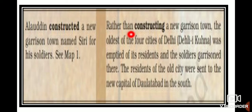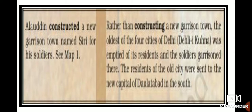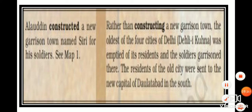Rather than constructing a new garrison town, Muhammad Tughlaq emptied the oldest of the four cities of Delhi. Its residents were sent to Daulatabad in the south, and the soldiers were garrisoned in that city. So the difference is: Alauddin Khilji constructed a new town, whereas Muhammad Tughlaq emptied an existing city, sent residents to Daulatabad, and occupied it with soldiers.